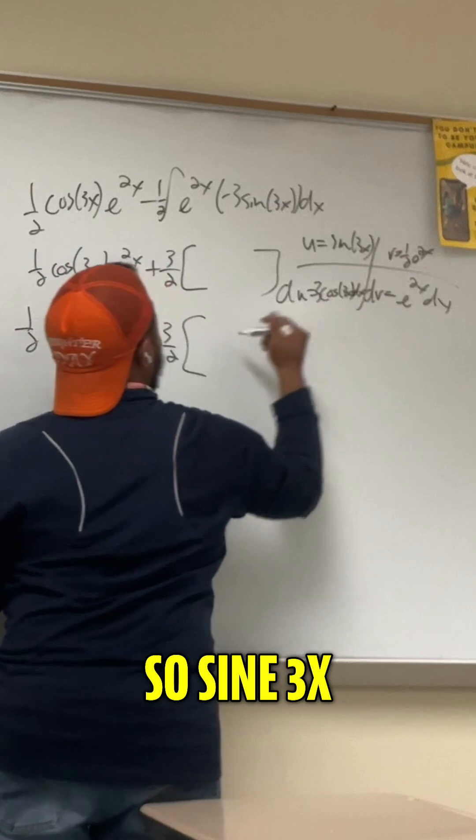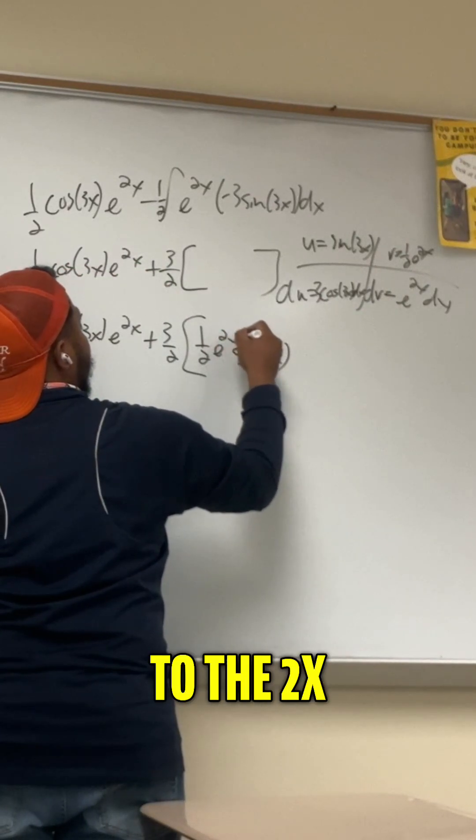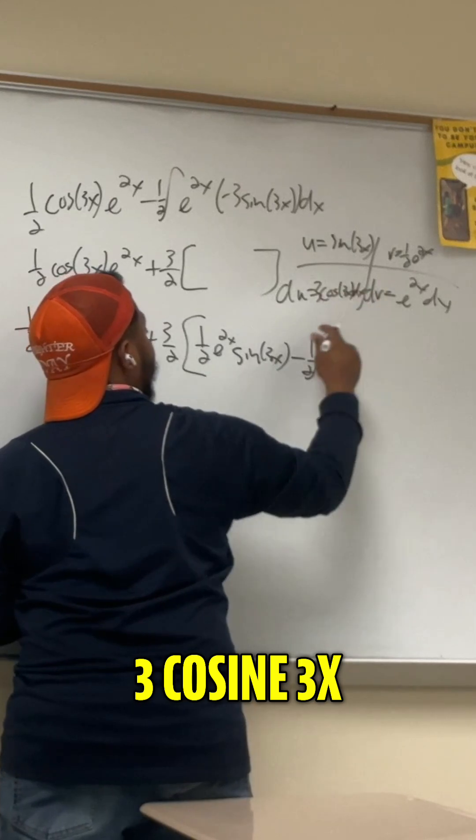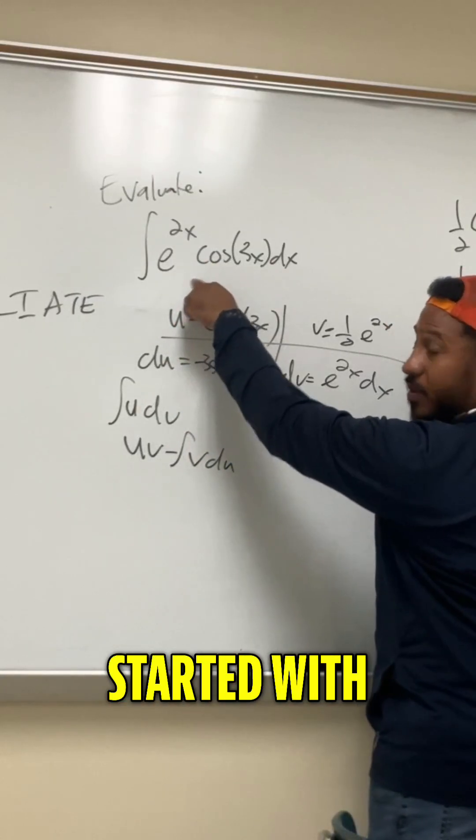2v, so sine of 3x times half of e to the 2x, minus the integral of 1 half e to the 2x. And then du is 3 cosine of 3x. It's actually the exact same as what we started with.